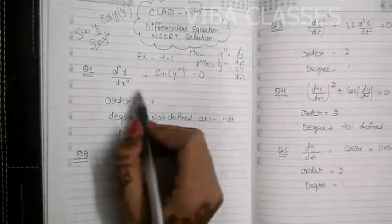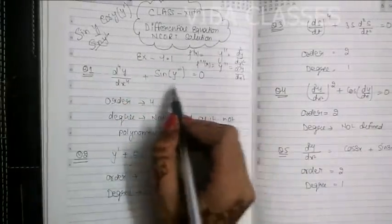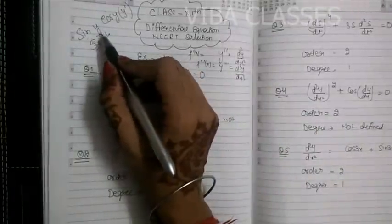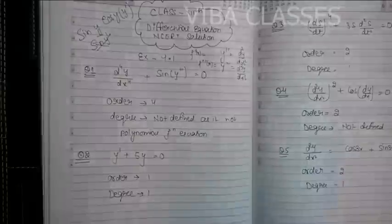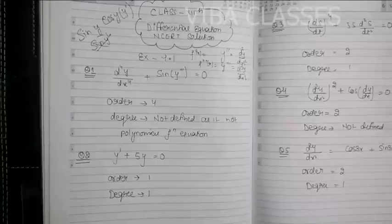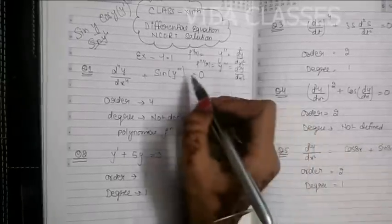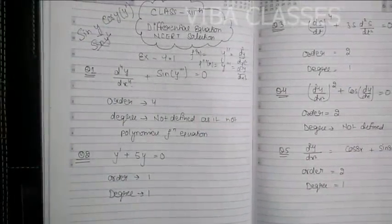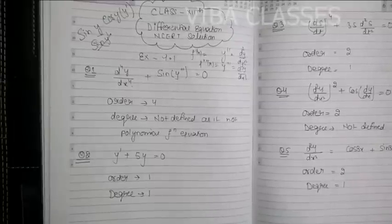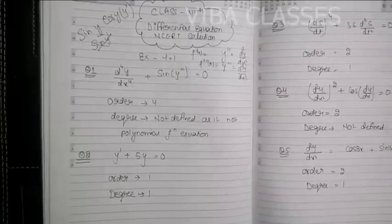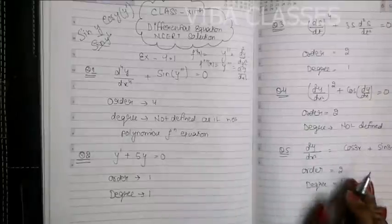The first question: you have a derivative, but this is not a polynomial function because you have y''' — that is wrong. You cannot have the derivative of y' as the derivative in that way. Here you can tell the order of the differential equation. The order means how much maximum derivative has been taken. This is y' and this is a fourth derivative, so the order is 4. But you cannot define the degree here because degree is defined only for a polynomial, where degree is the highest power.